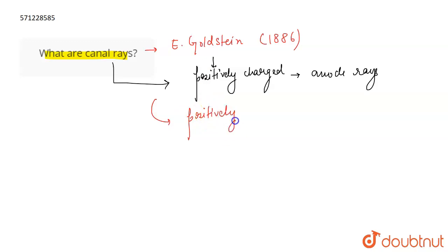It consists of a positively charged subatomic particle, which is protons. So this is what a canal ray is - it is a positively charged ray.